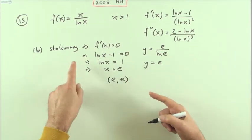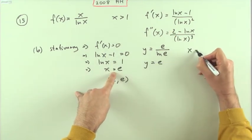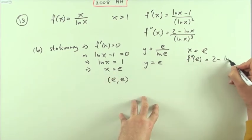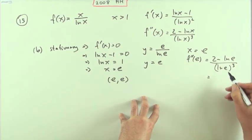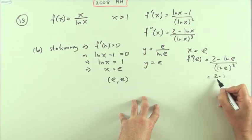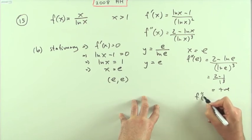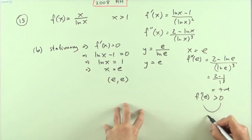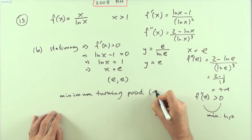What's its nature? Putting that value of x into the second derivative gives me this. If x equals e, then the second derivative at e is going to be two minus ln e over ln e cubed, which is going to be two take away one over one cubed, which is positive. So if the second derivative is greater than zero, that means it's concave up, you've got increasing gradients, so that's a minimum turning point. The answer is I've got a minimum turning point at (e, e).